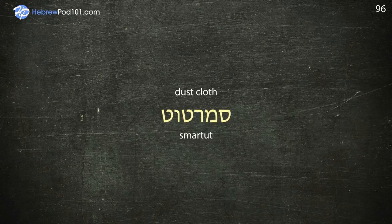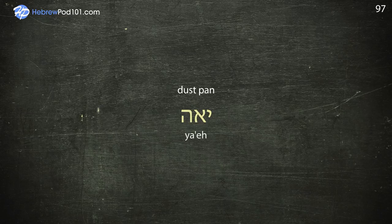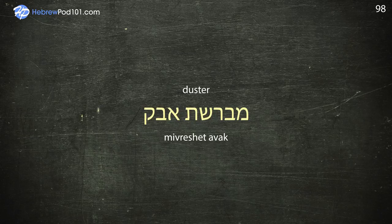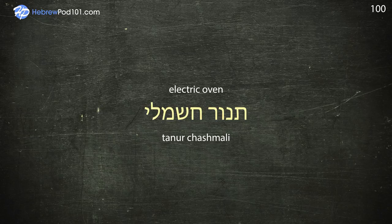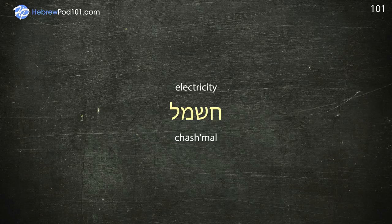Dust pan. Duster — Mivrashet Avak. Eating utensil — Sakum. Electric oven — Tanu Khashmali. Electricity — Chashmali. Elevator — Maalit.